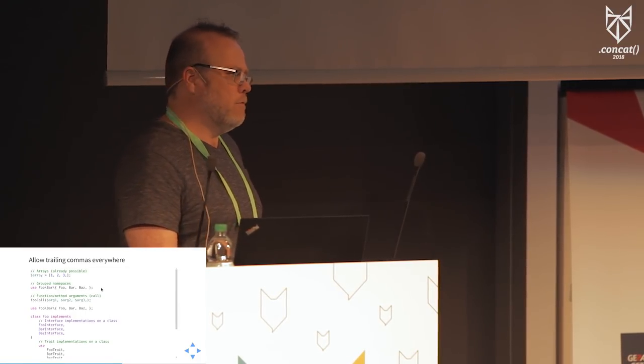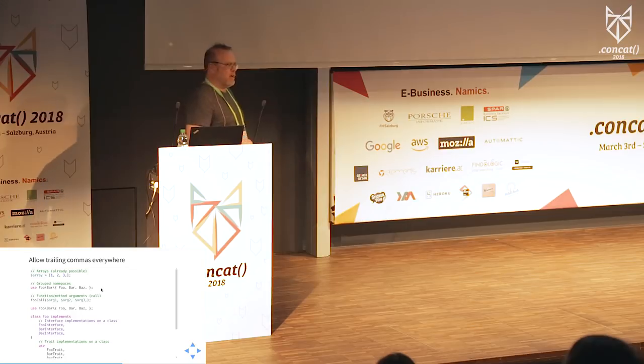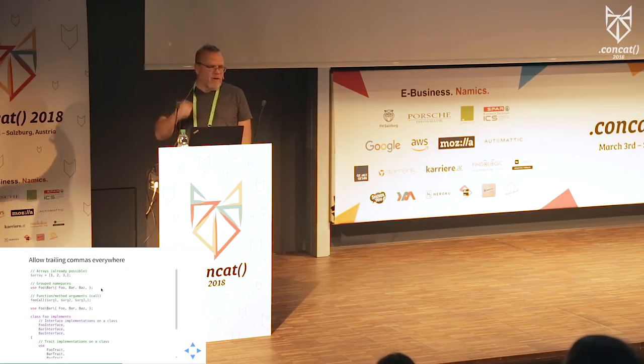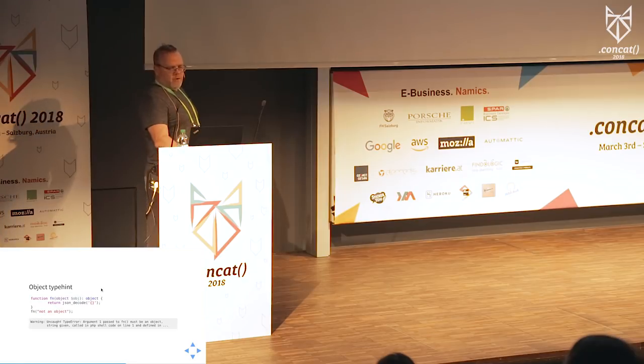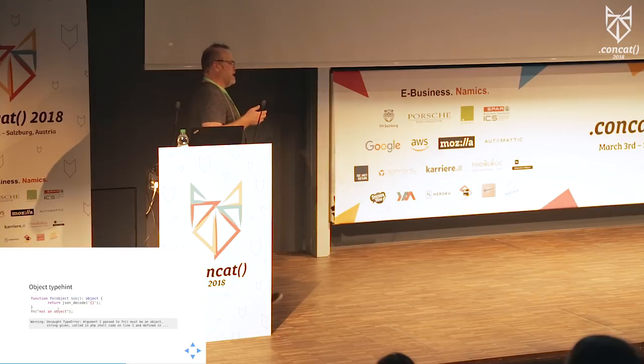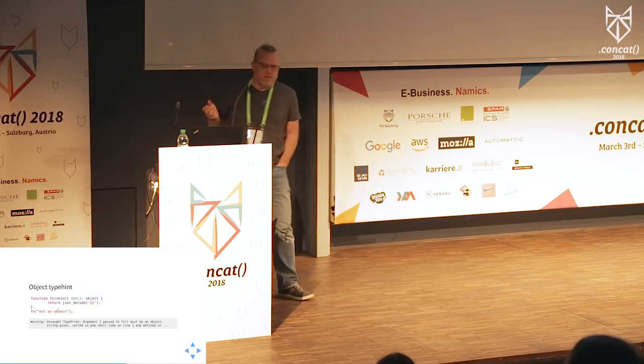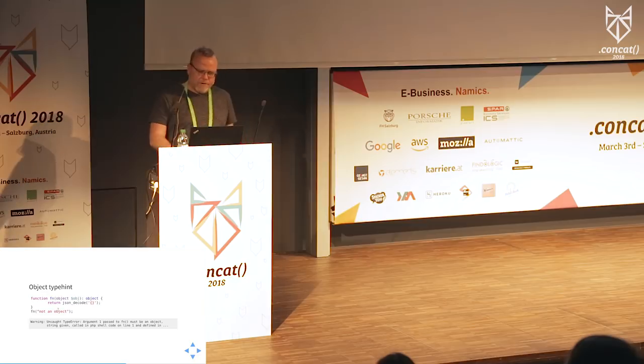We now allow trailing commas everywhere — we allowed that in arrays before, but now, with a nod to the great JavaScript comma debate, anywhere you have a list of things separated by commas in PHP 7.2 you can have a trailing comma. There's also an object type hint that lets you declare that something takes an object — doesn't matter what type — and something returns an object of whatever type.